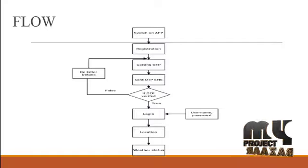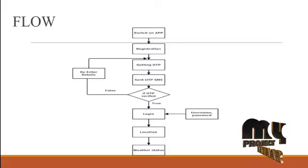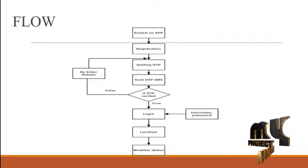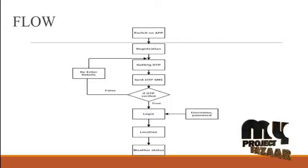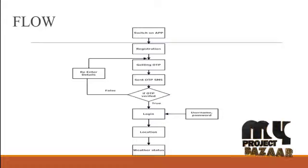Let us see the flow of our project. Our project is a Fisherman temperature details app for Android. First, the fisherman needs to enter their registration details — name, phone number, and password. Once they register, an OTP message is sent via SMS. If the OTP is verified, the fisher is allowed to login. After entering the username and password, the app moves to the next panel which contains location and weather status of the current location.